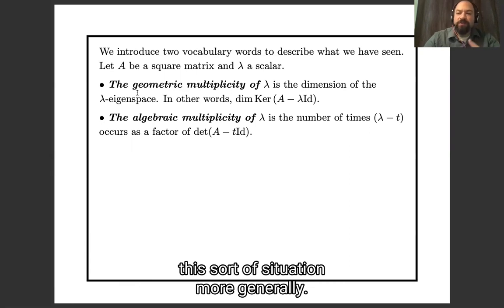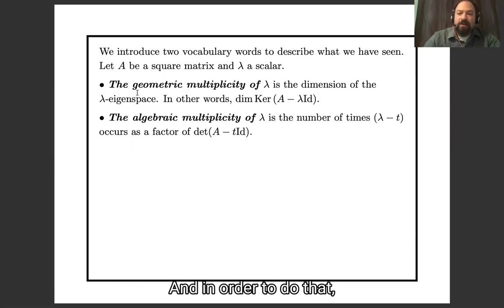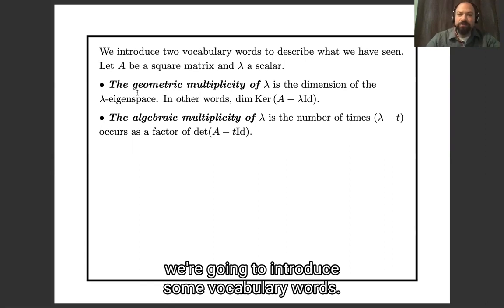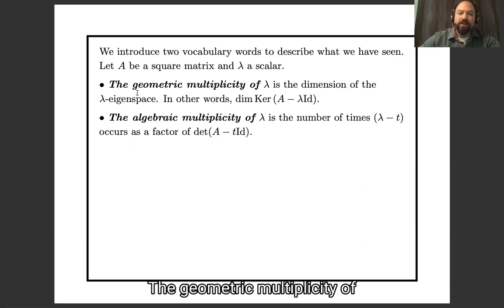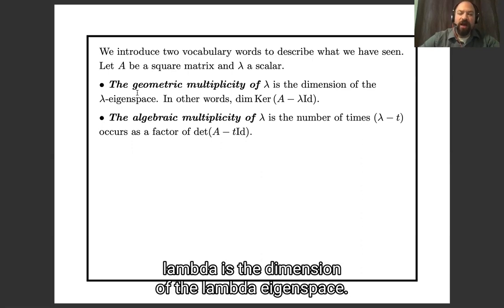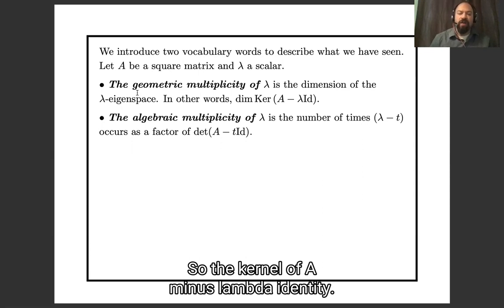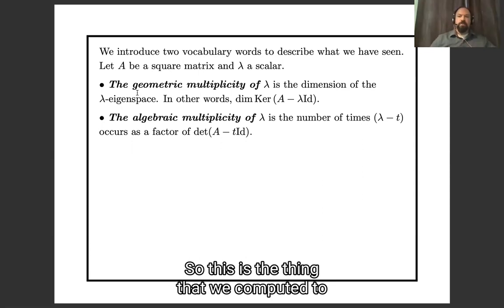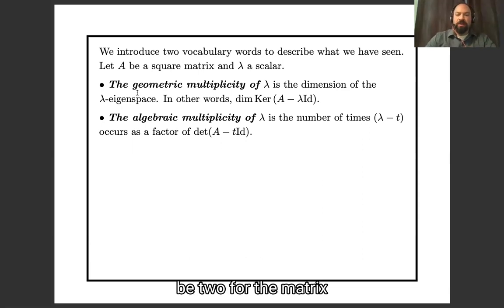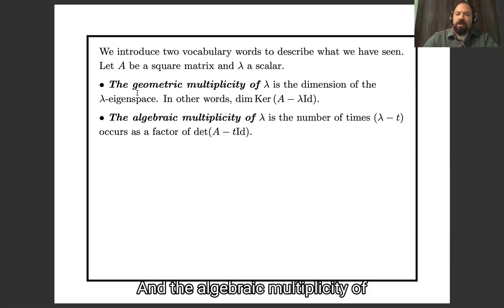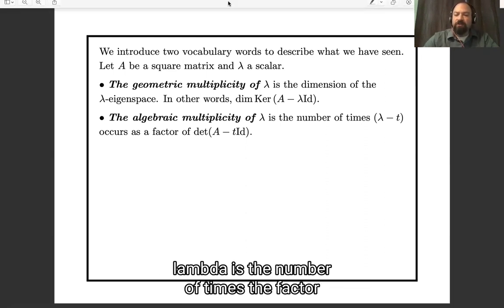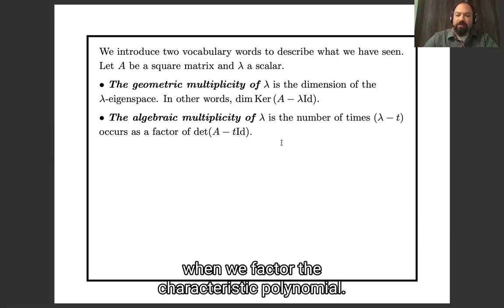We want to talk about this sort of situation more generally, so we're going to introduce some vocabulary. Let A be a square matrix and let lambda be a scalar. The geometric multiplicity of lambda is the dimension of the lambda eigenspace — that is, the kernel of A minus lambda times the identity. The algebraic multiplicity of lambda is the number of times the factor (lambda minus t) occurs when we factor the characteristic polynomial.